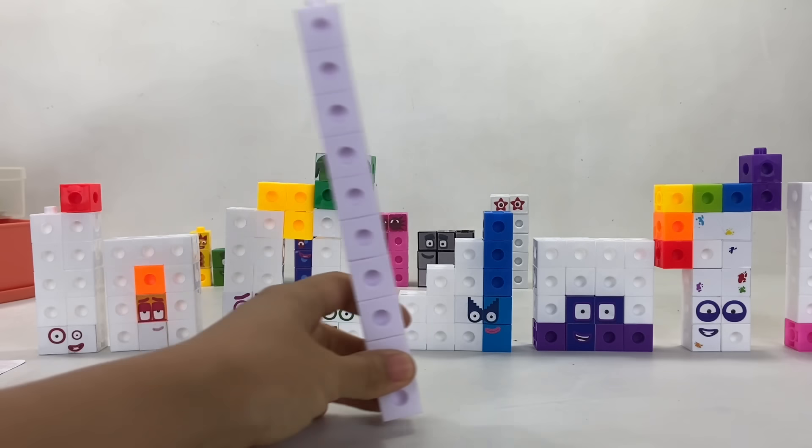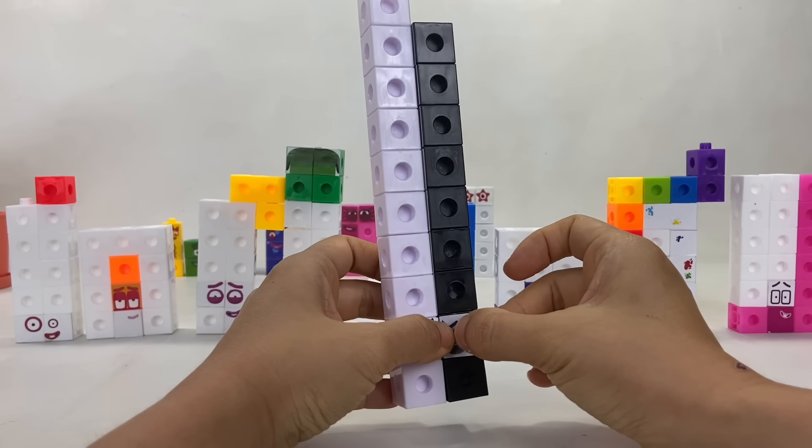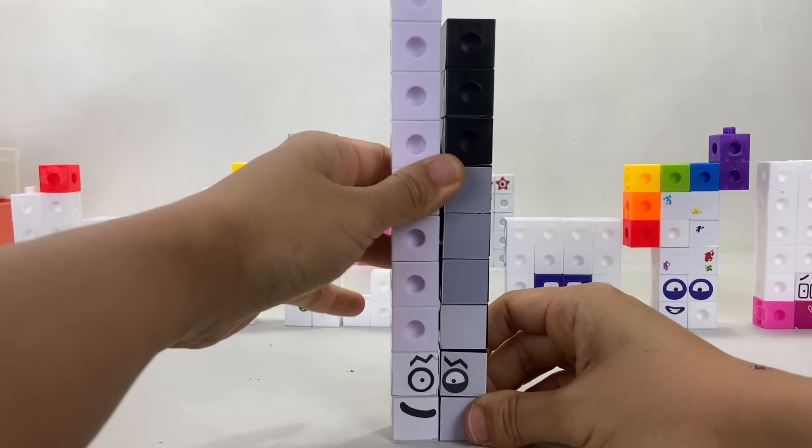Next is the Number Block with the craziest shapes in Number Land! Number Block 19! He's made up of 10 white blocks and 9 grey blocks!